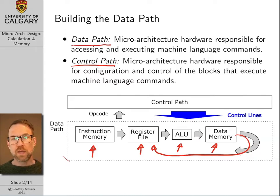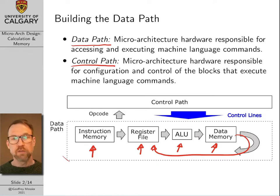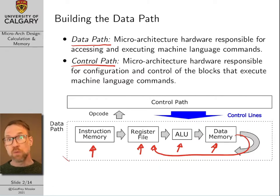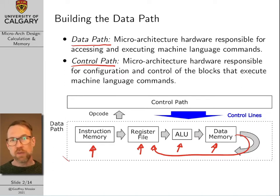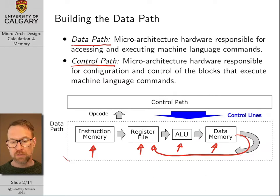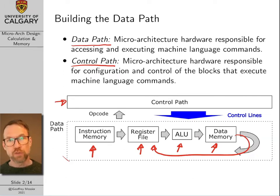Each of the blocks in our data path have a series of control lines. For example, the data memory has a control line that controls whether or not we write a value to the data memory — same thing with the register file. The ALU had a three-bit control bus, and depending on how we set the values of that control bus, we could do things like addition, subtraction, or a bitwise AND operation. The control path is basically responsible for setting all those control lines, hence the name.